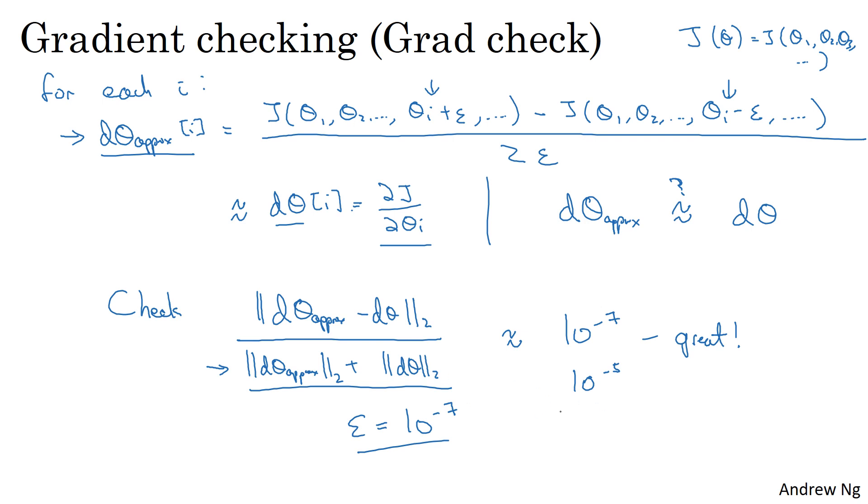And if this formula on the left is on the order of 10 to the minus 3, then I would worry. I would be much more concerned that maybe there's a bug somewhere. But you should really be getting values much smaller than 10 to the minus 3. And if it's any bigger than 10 to the minus 3, then I would be quite concerned. I would seriously worry about whether or not there's a bug.